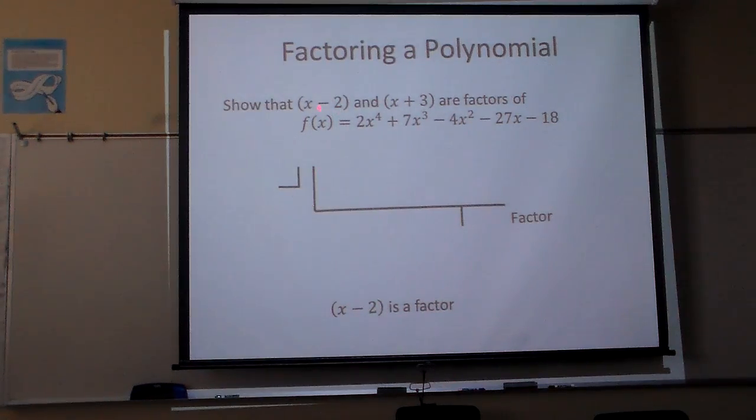We're going to show that this x minus 2 is a factor, alright? Now, if it's x minus 2, guess what number goes in there? 2. Positive 2. And my coefficients will be 2, 7, negative 4, negative 27, negative 18.